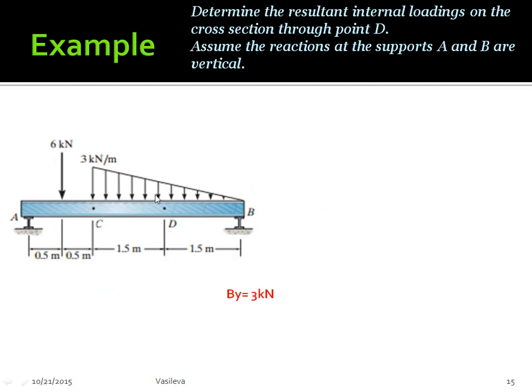The next step is, because we want to focus on cutting the beam at point B, we could look at everything to the left or everything to the right. If we look at everything to the left, it's more complicated because we end up with a load that has a rectangle and a little triangle. So instead, I'm going to look at everything to the right because that only has this little triangle right here.